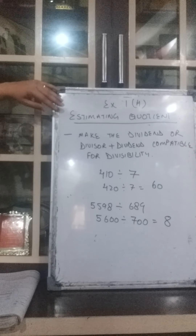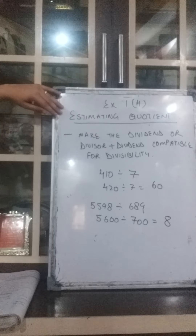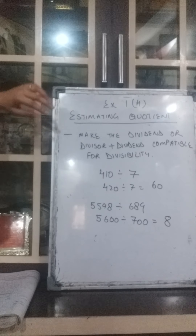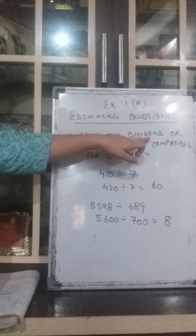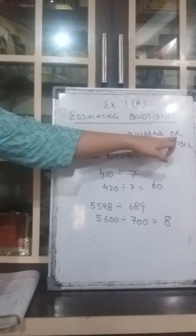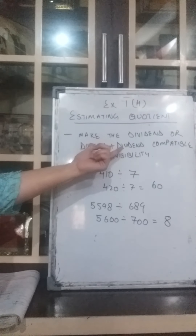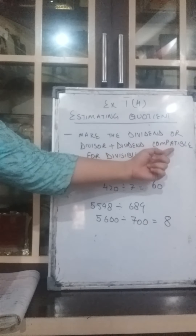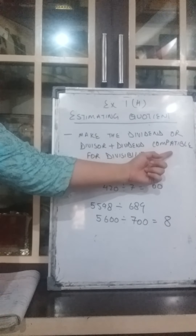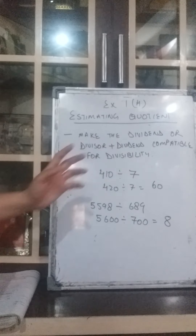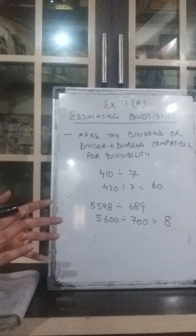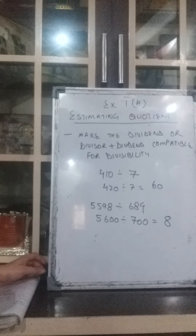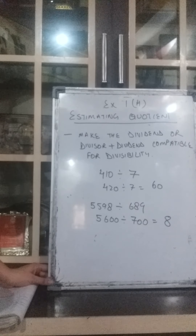In the division process, what we have to do is make the dividend, or both the divisor and dividend, into such compatible numbers so that they can be divided by each other. Now what does that mean? We will understand by an example.